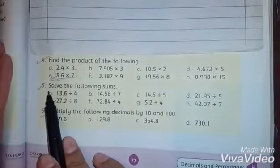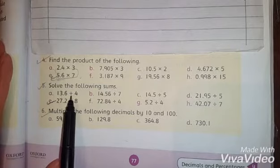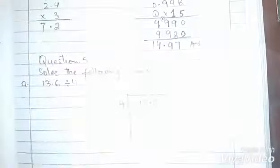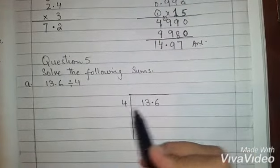Students, question number 5, solve the following sums. We have solved this. Here we have divided sign. This means that we have to divide. 13.6 divided by 4 part A.